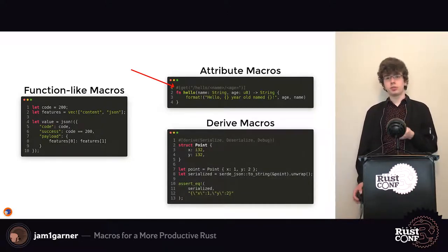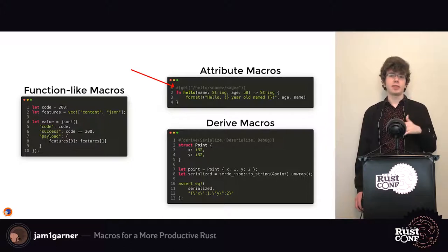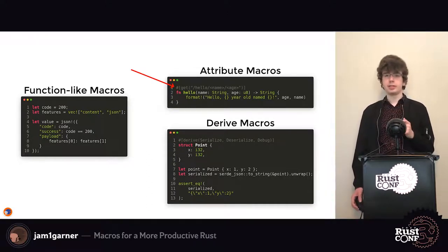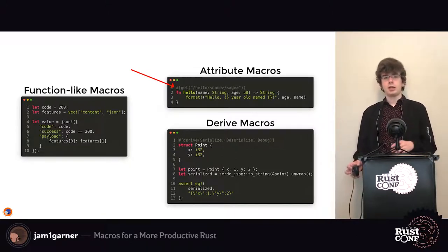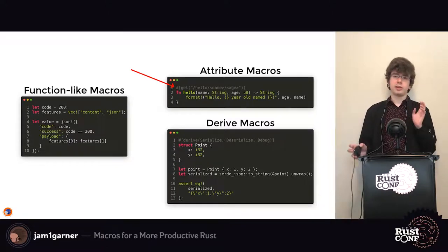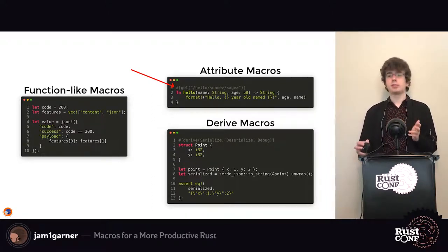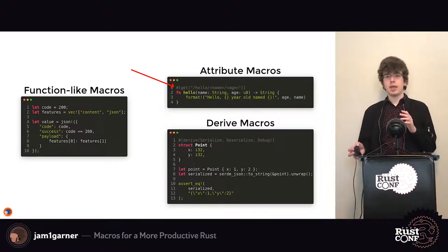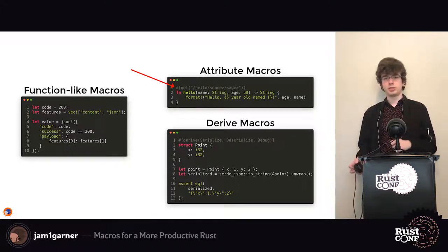Lastly, there are derive macros. If you're familiar with Rust you've probably derived things like Clone, Debug, or Copy. Derive macros let you create your own derive handler for implementing a trait automatically. A great example is serde, which lets you derive Serialize and Deserialize for arbitrary structs or enums, and then serialize or deserialize them to and from any format that supports serde — for example, serde_json for converting to and from JSON strings.